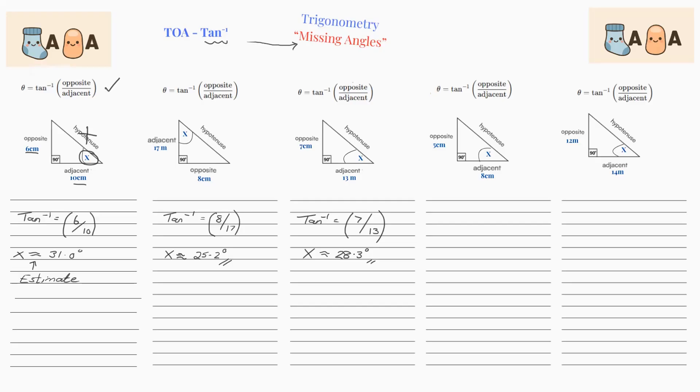Next one. Opposite is 5 over 8. And then I get an estimate of 32 degrees.